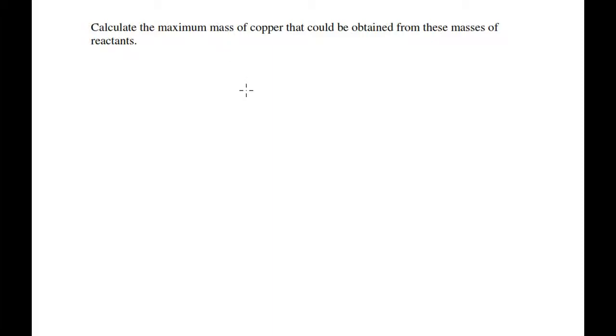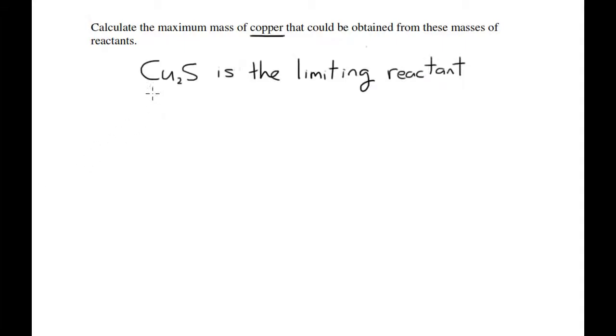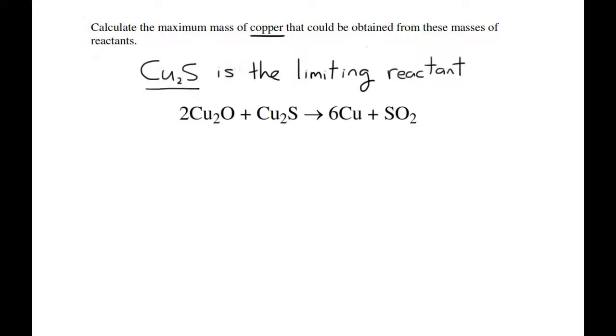This is part two of the limiting reactant problem. In this part, you have to calculate the maximum mass of copper that could be obtained from these masses of reactants. In the previous video we determined that the limiting reactant is Cu₂S, and we also calculated that we had 31.4 moles of Cu₂S.